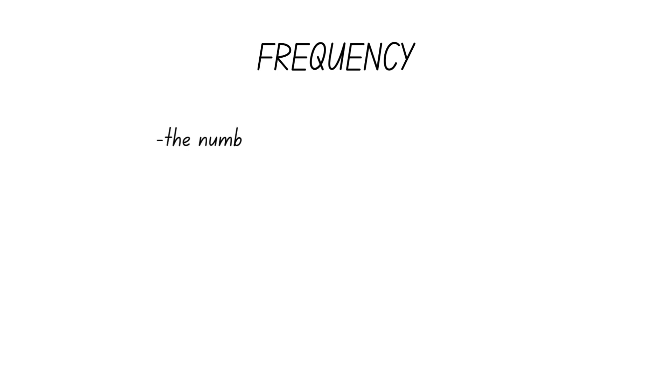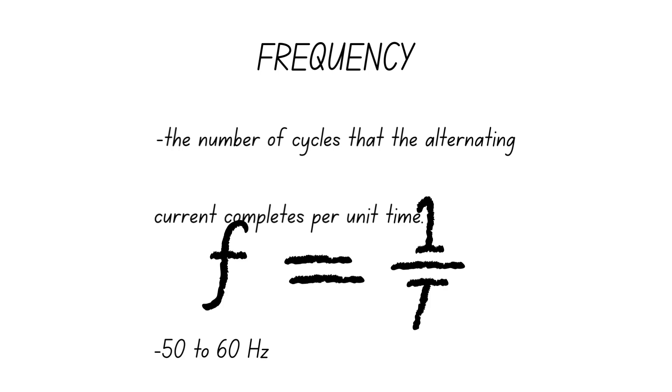Frequency is defined as the number of cycles that the alternating current completes per unit time. This can be around 50 to 60 hertz for household power, but can be much higher in some special applications.